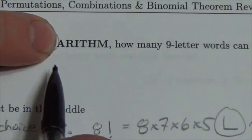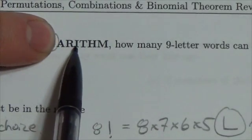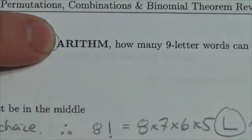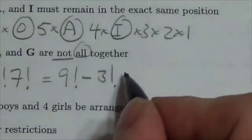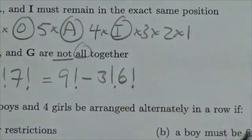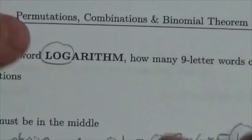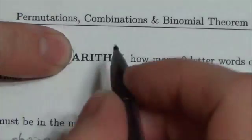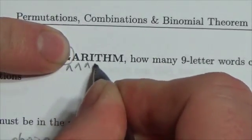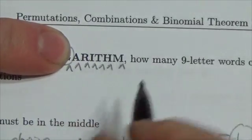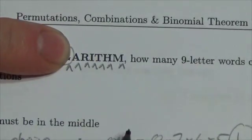Once the L, O, G is out of there, I've got one, two, three, four, five, six letters that I have to permute. And there's six factorial ways of permuting those. And then, with those six letters, there are seven different places that the L, O, G can fit.